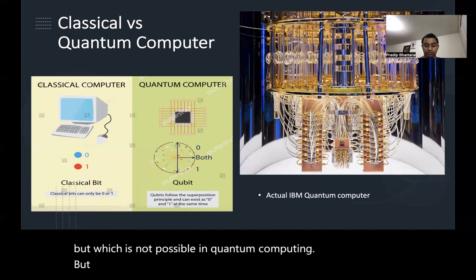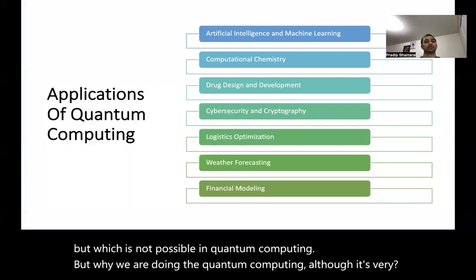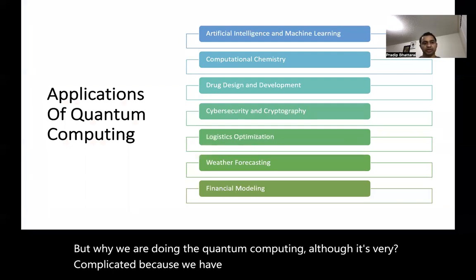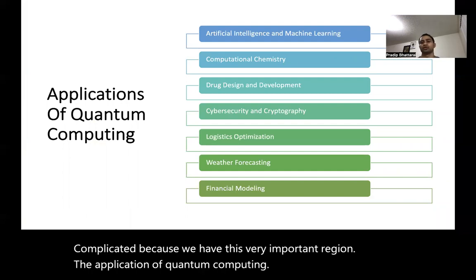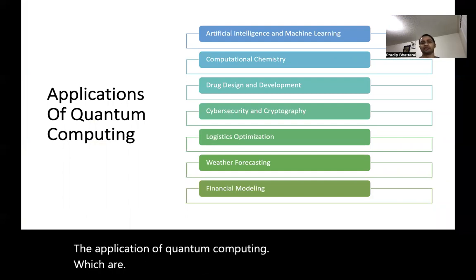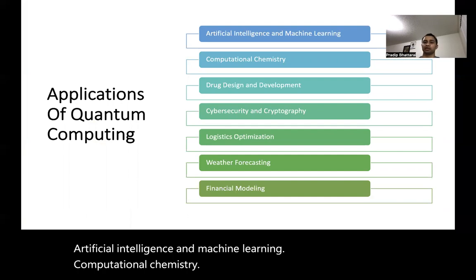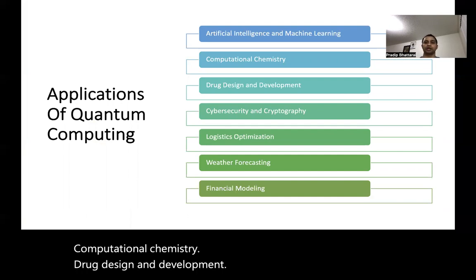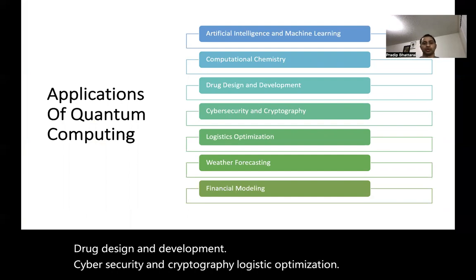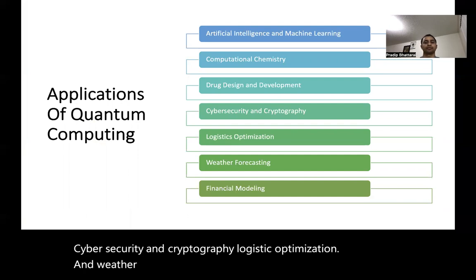But why are we doing quantum computing although it's very complicated? Because of the important applications: artificial intelligence and machine learning, computational chemistry, drug design and development, cybersecurity and cryptography, logistic optimization, weather forecasting, and financial modeling.